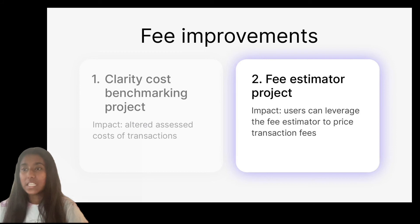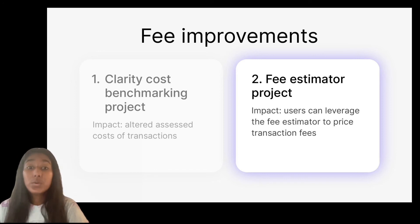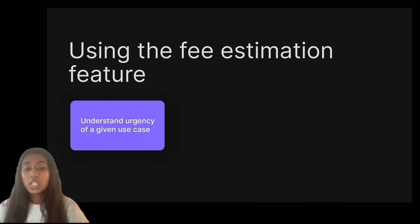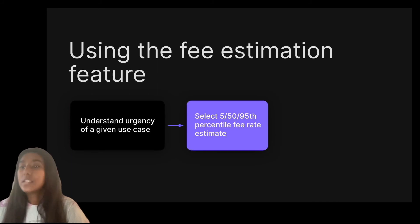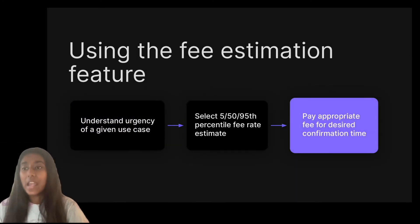The second project is the fee estimator project. With this project, we analyzed historical transaction data to compute average fee rate estimates. This work gave users more accurate estimates as to what a high or low fee rate might look like at any given point in time. Now, let's discuss how a user might use the fee estimator endpoint. First, the user must understand the urgency of their use case. Depending on this understanding, the user can select either the 5th, 50th, or 95th percentile fee rate estimate — which basically just means low, medium, or high fee rate. Lastly, they then pay the estimated fee rate to get their desired confirmation time.